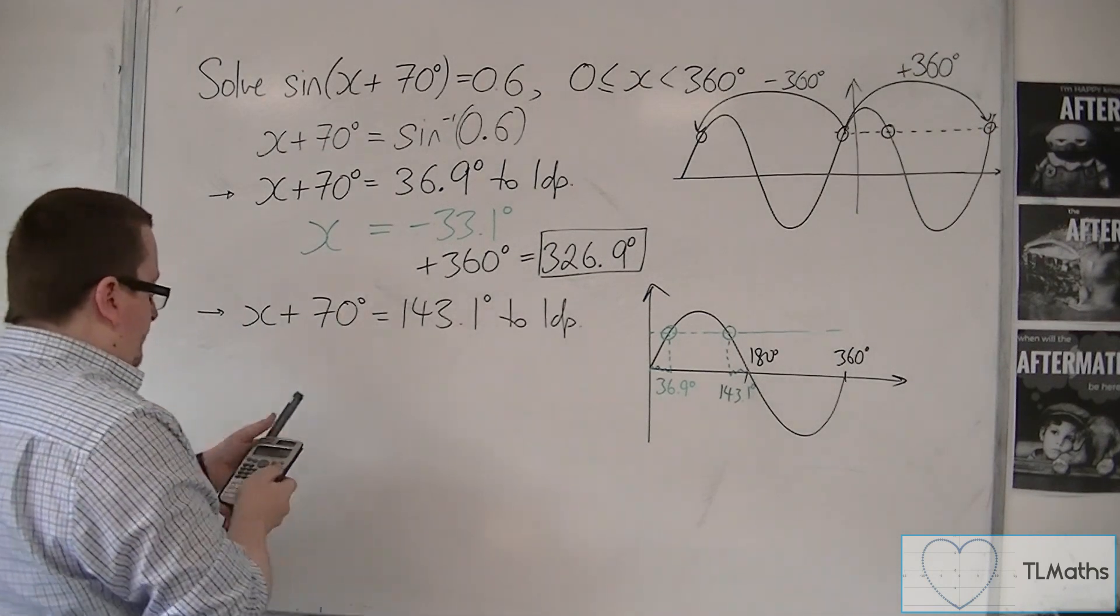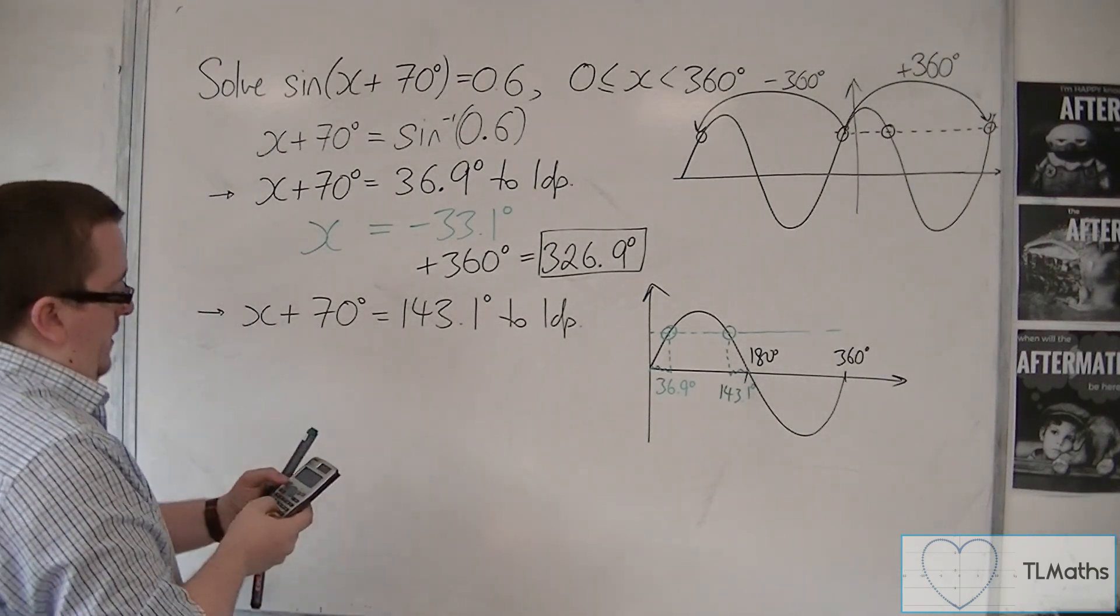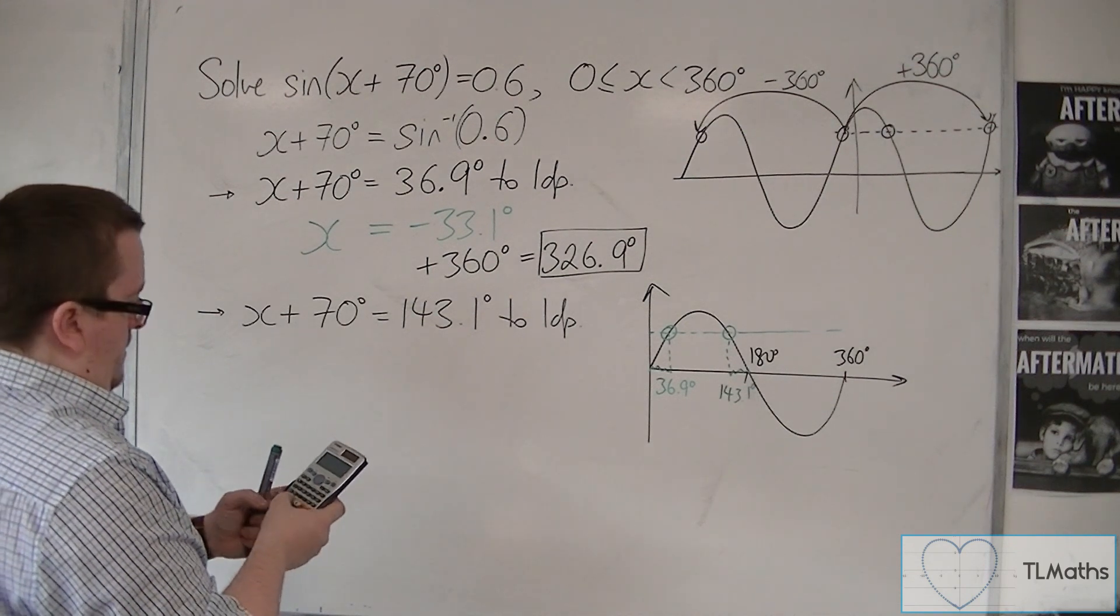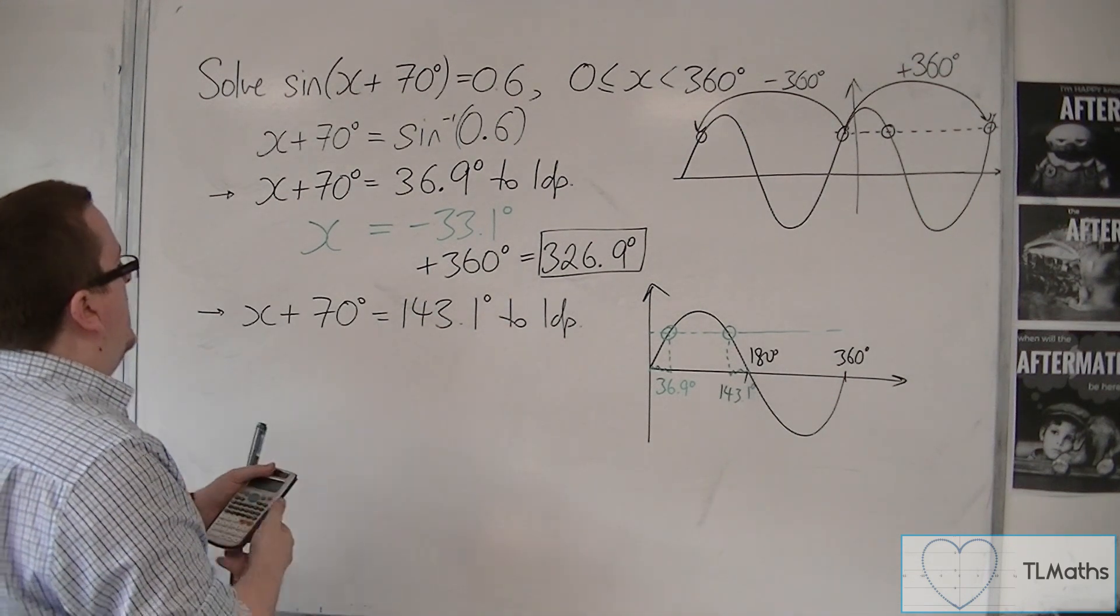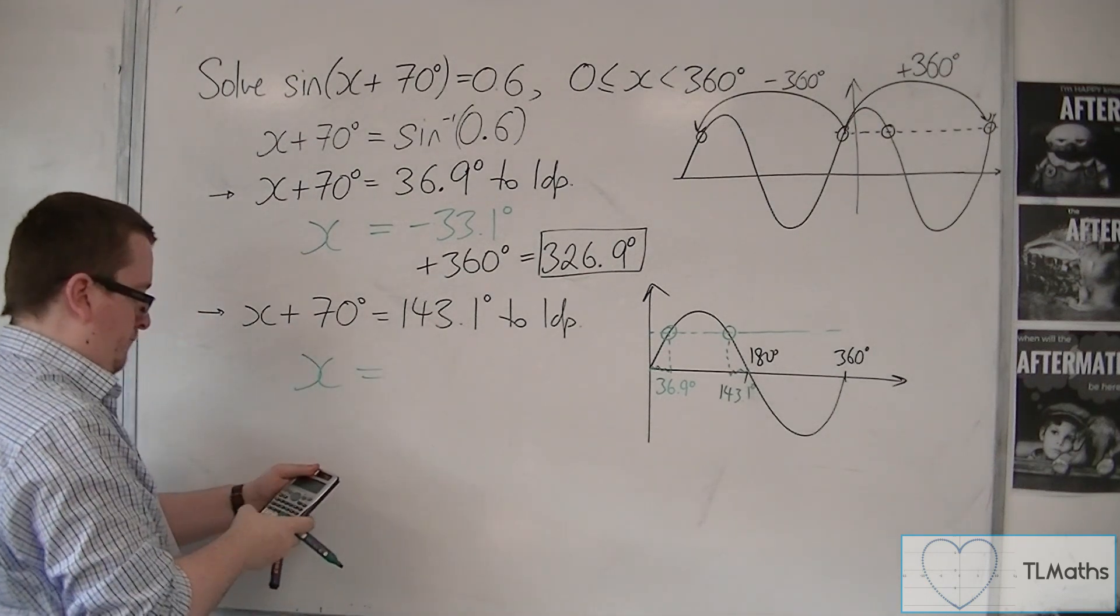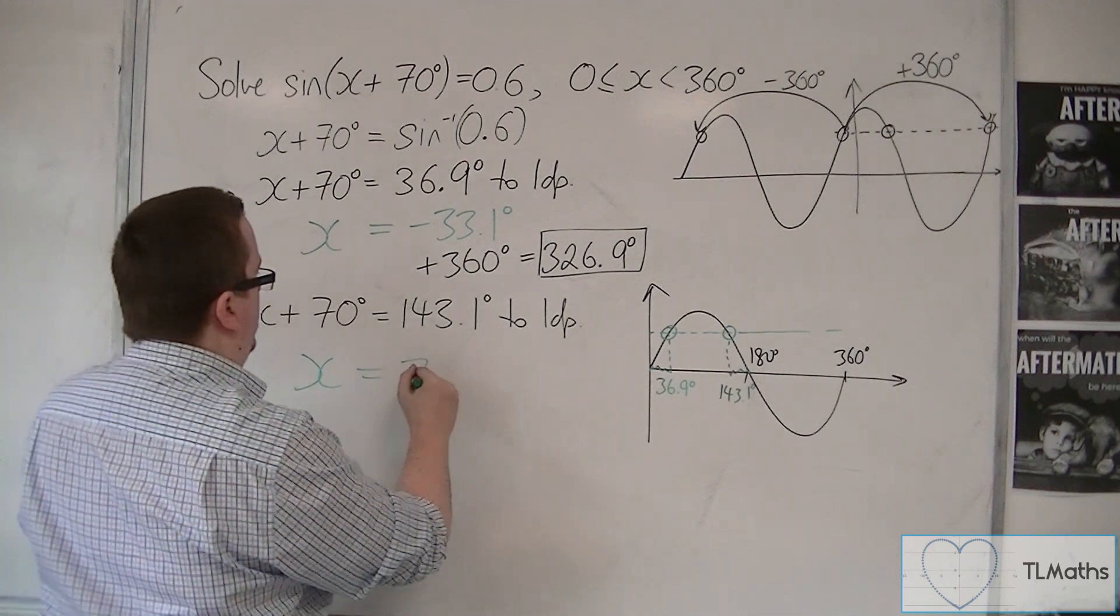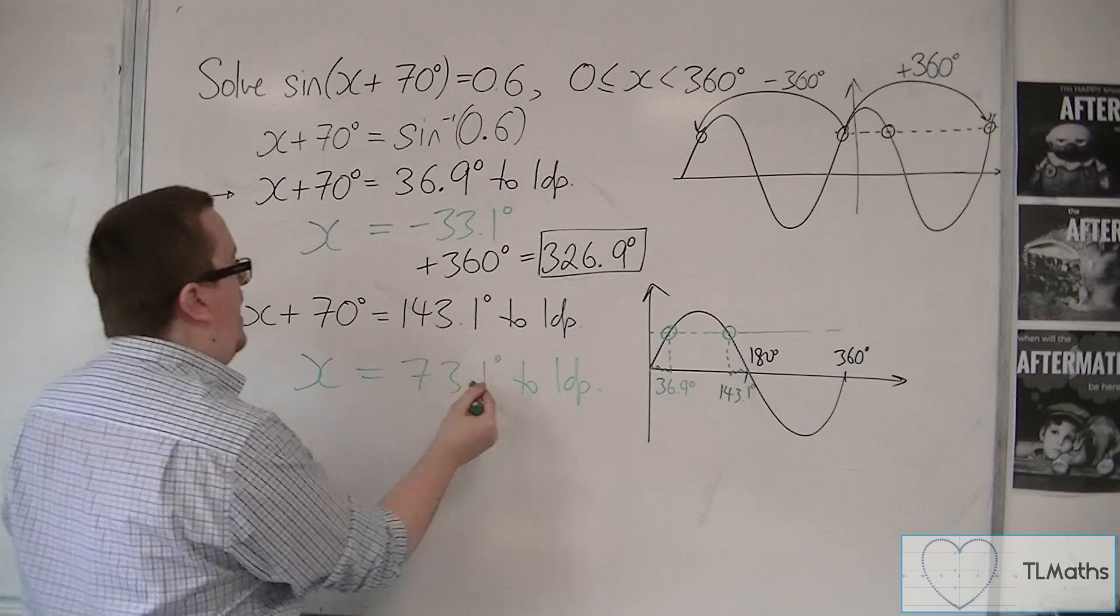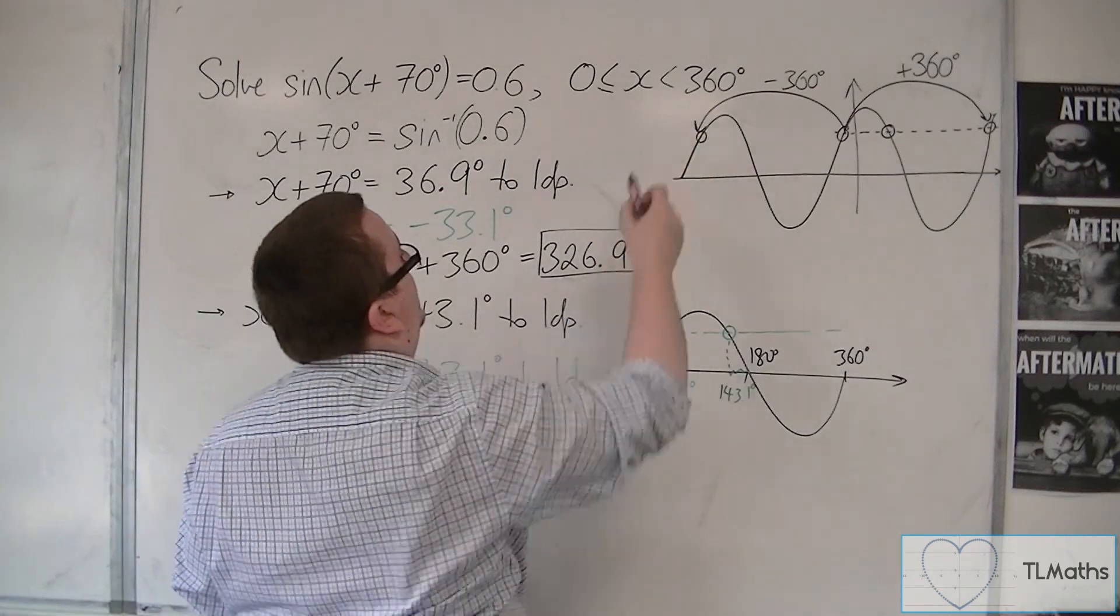For this one, if I get back to that 143.1 quickly. Then I'm going to subtract 70 from both sides. And I get 73.1, obviously, to one decimal place.